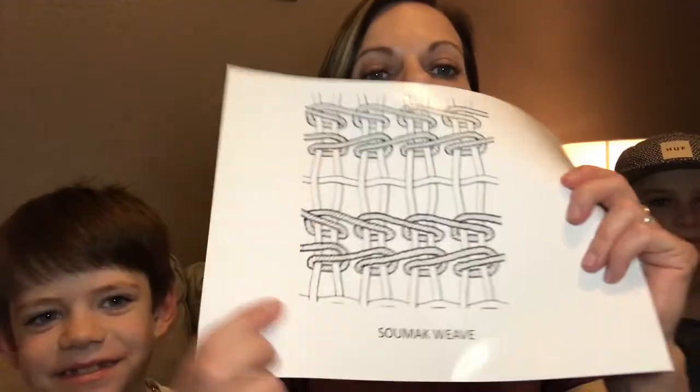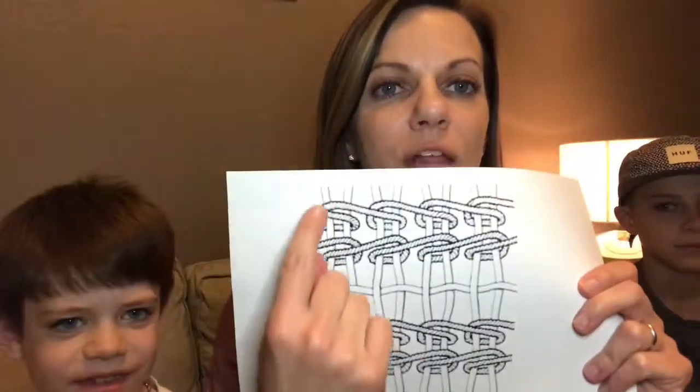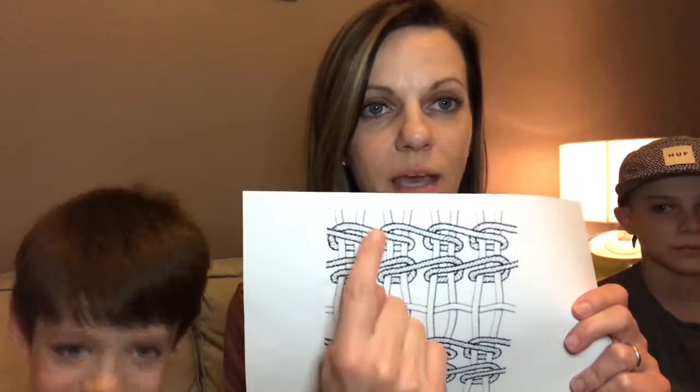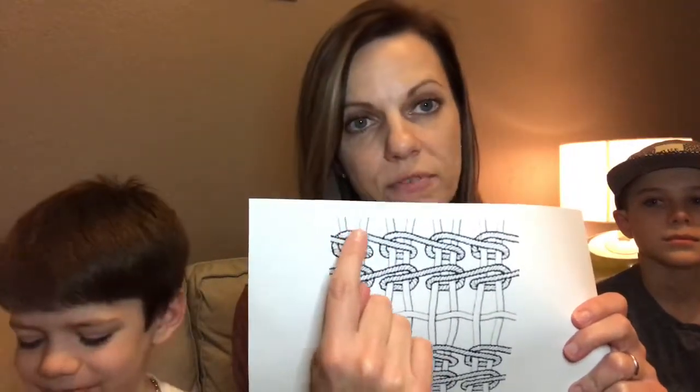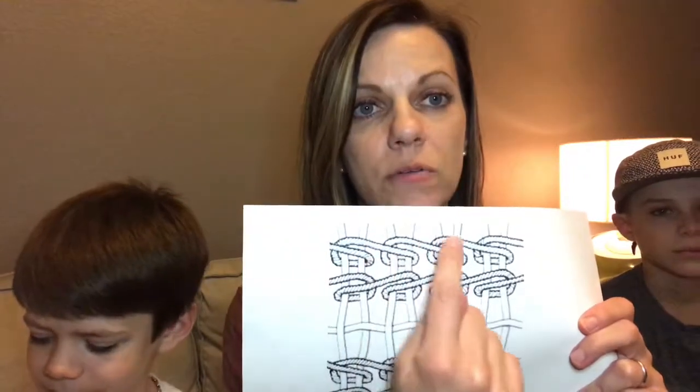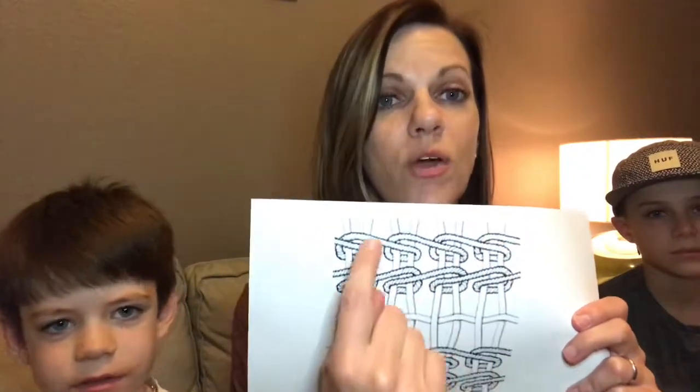Whoops, that's upside down. The sumac weave is a looping weave. In this image you'll see that the weft thread is looping around two warp threads. We're gonna be doing the loop but we're gonna go around every single warp thread. So here we go.